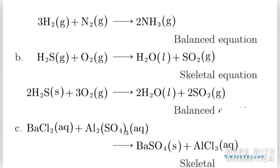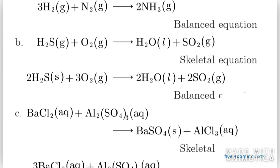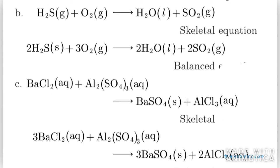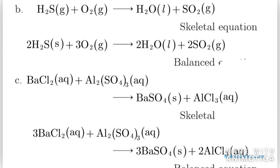In the second one, hydrogen sulfide gas burns in air to give water and sulfur dioxide gas. You are given all the reactants and products — frame the equation and balance it. The skeletal equation is H2S + O2 → H2O + SO2. The balanced equation is: 2H2S + 3O2 → 2H2O + 2SO2.